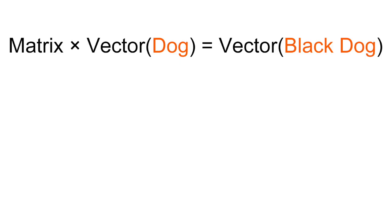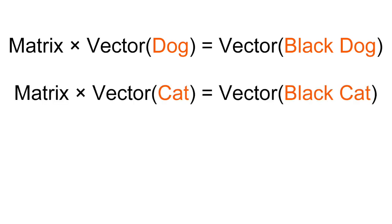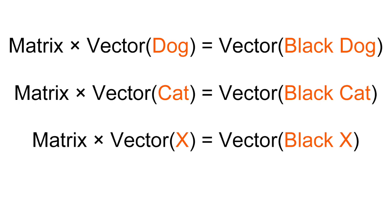You do this for 'dog' and 'black dog,' 'cat' and 'black cat,' and other pairs like that. What you do is try to find a matrix such that the matrix transforming the vector for 'dog' produces the vector for 'black dog,' and transforming 'cat' to 'black cat,' 'x' to 'black x' — and this way you build a matrix that represents 'black.'